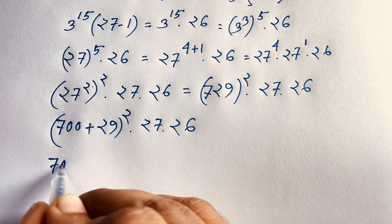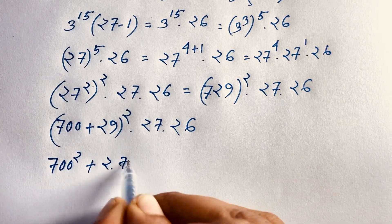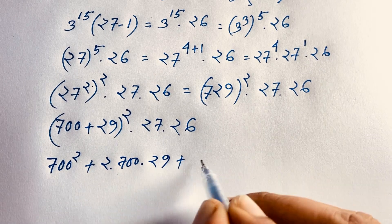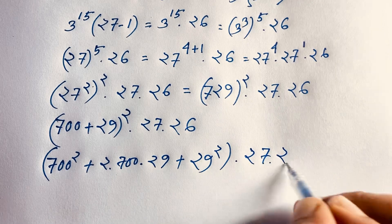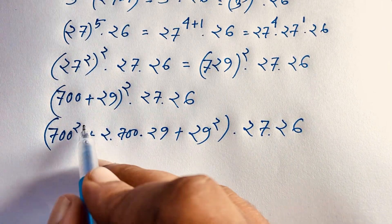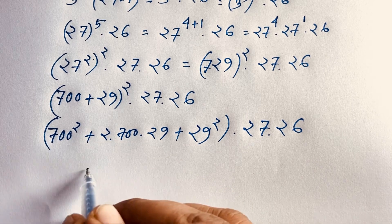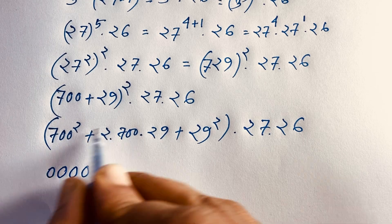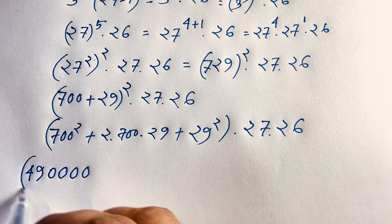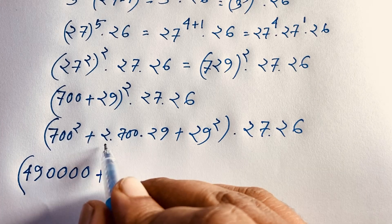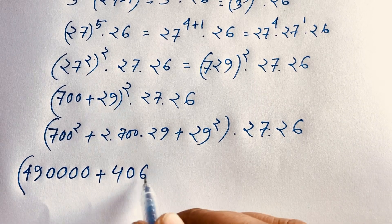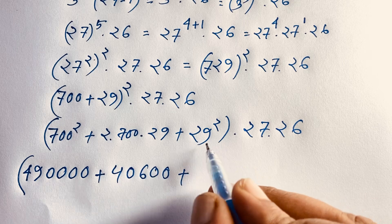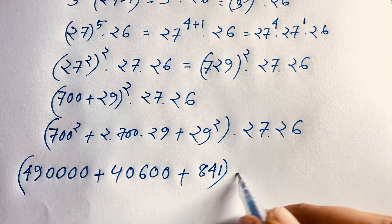Applying the formula: 700 squared plus 2 times 700 times 29, plus 29 squared, then multiplied by 27 times 26. So 700 squared is 490000. 2 times 700 times 29 equals 58 times 700, which is 40600. And 29 squared equals 841.